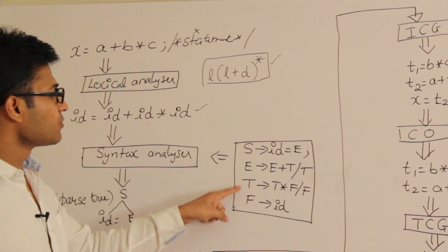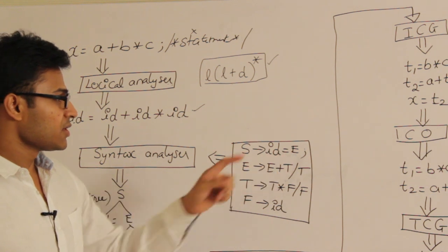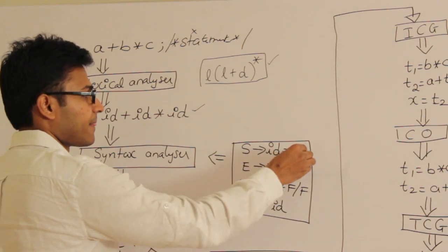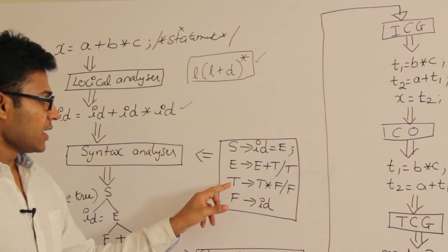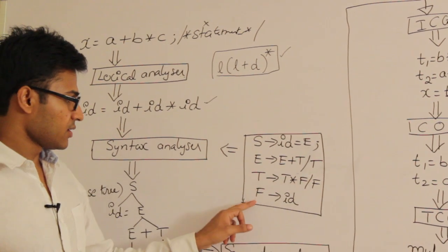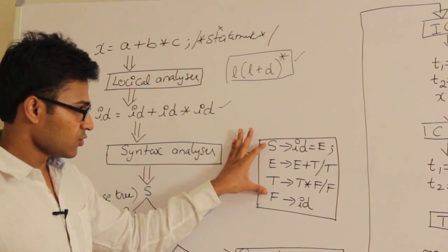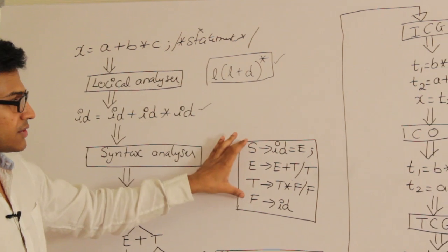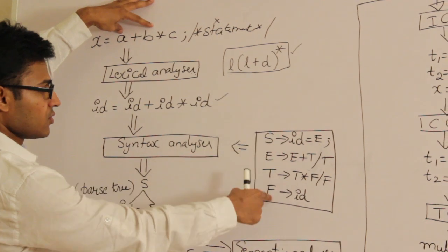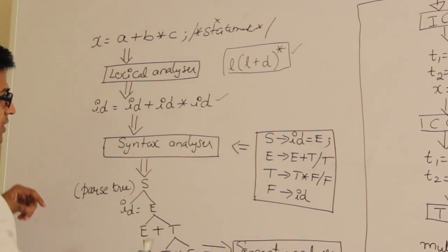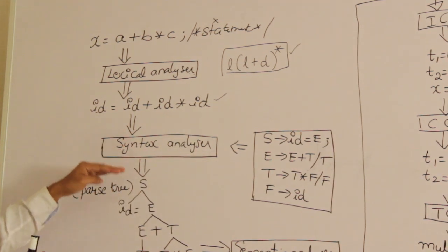For example, these few productions mean this: a statement can be an identifier equal to an expression followed by a semicolon. An expression can be an expression plus a term, or just a term. A term can be a term into a factor, or just a factor. A factor can simply be an identifier. Using these rules, your program has to be matched, which means the input has to be checked whether it follows the format. The syntax analyzer, also called parser, is going to construct a parse tree.